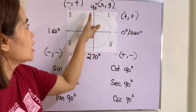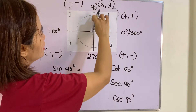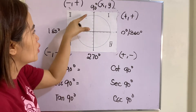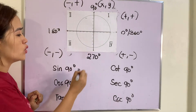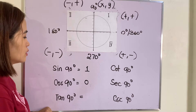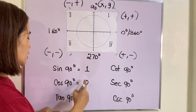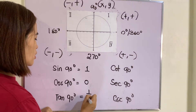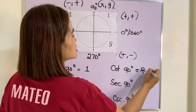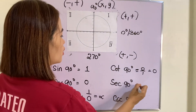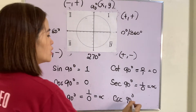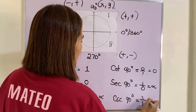For 90 degrees: the y-axis has length one, and since y represents the sine function, sine of 90 equals one. There is no x at this angle, so cosine of 90 equals zero. For tangent, we get one over zero, which is undefined. For cotangent, we have zero over one, which equals zero. For secant, the reciprocal of cosine is one over zero, which is undefined. And for cosecant, the reciprocal of sine is one over one, which equals one.